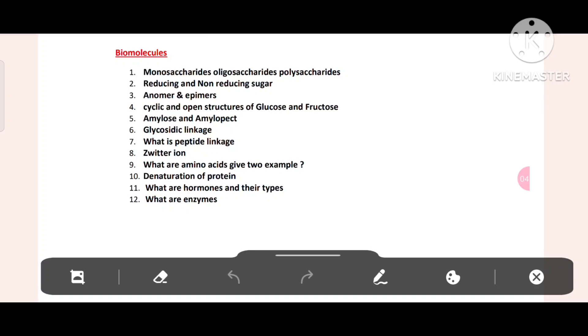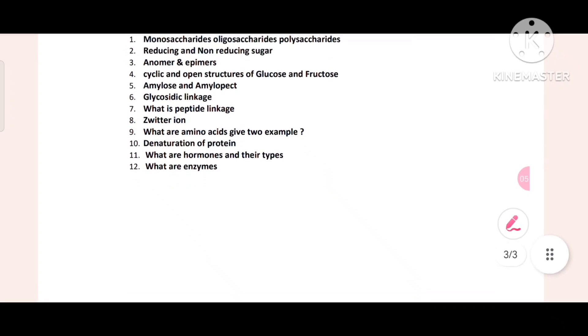Biomolecules. Monosaccharides, oligosaccharides, polysaccharides. Reducing and non-reducing sugar, anomers, epimers. Cyclic and open structure of glucose and fructose. Amylose and amylopectin. What is peptide linkage, zwitterion. What are amino acids, give two examples. Denaturation of protein. What are hormones and their types and what are enzymes.